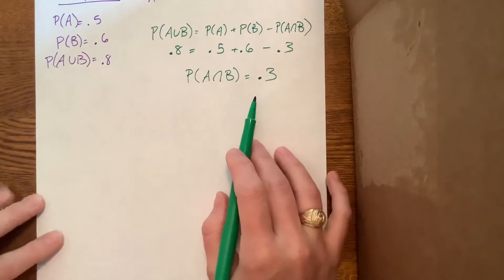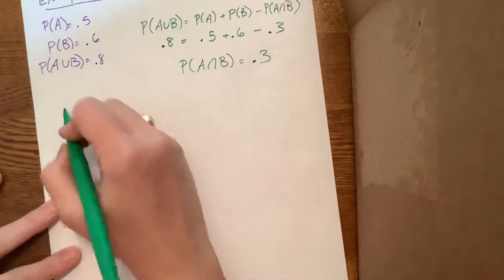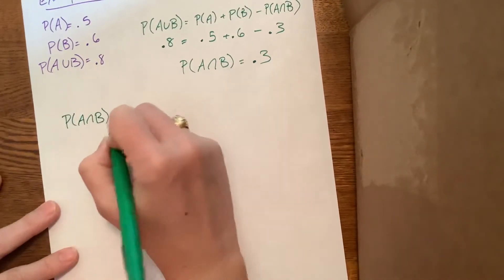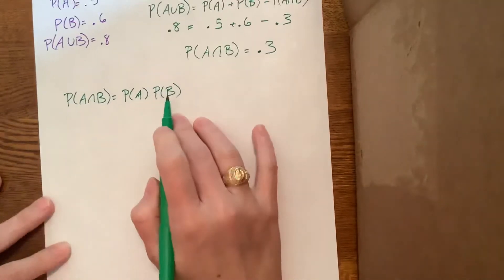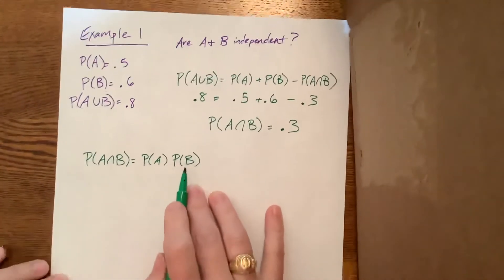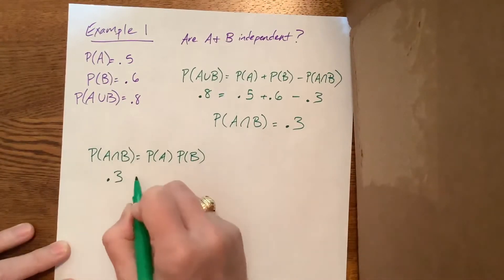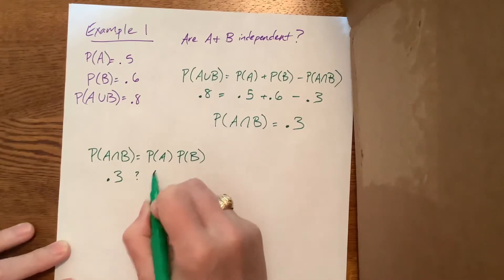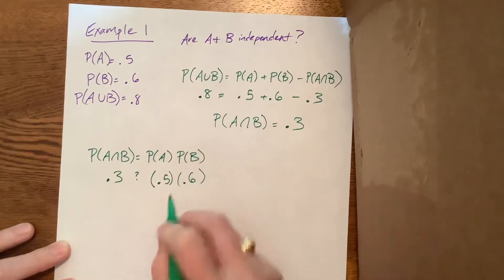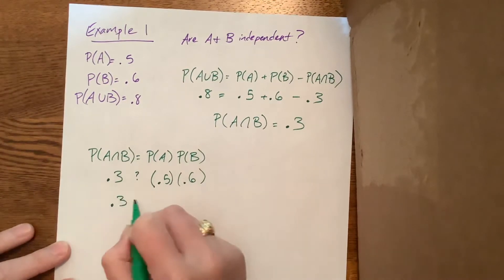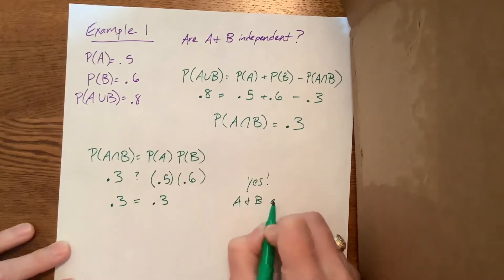So in order to find out if they're independent, what I need to do, the easiest thing to do with this one is to use the fact that the probability of A intersect B has to equal the probability of A times the probability of B. If this is a true statement, then we know that A and B are independent. We just found that that is 0.3. Is this equal to the probability of A, 0.5, times the probability of B, 0.6? Notice 0.5 times 0.6 is, in fact, 0.3. So yes, A and B are independent.